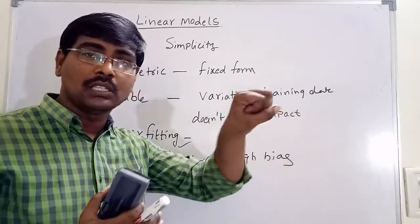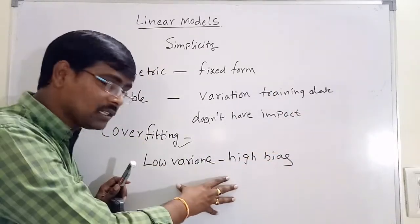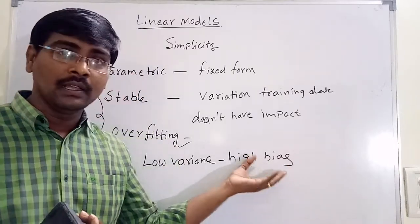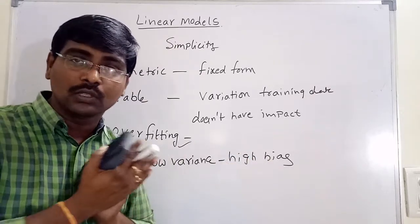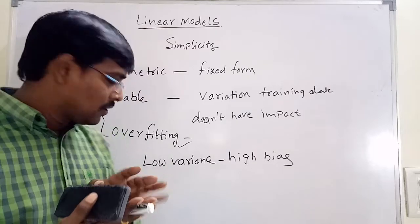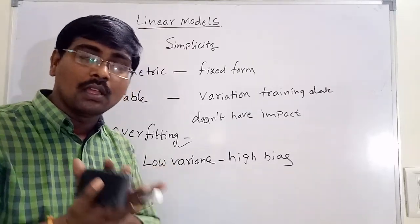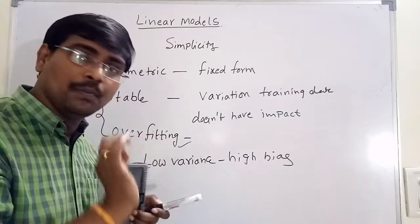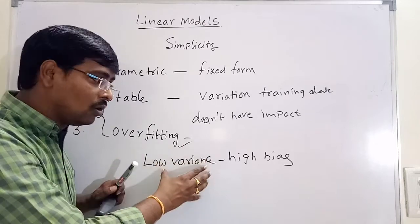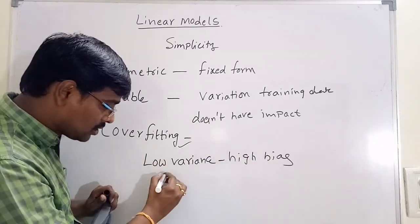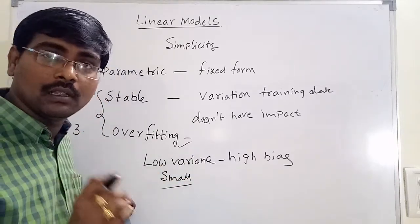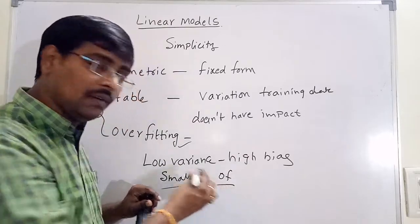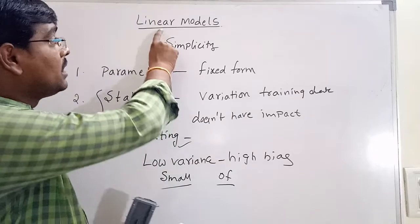Compared to decision trees, which are high variance and low bias. The advantage of high bias is that overfitting is eliminated — there is no chance of overfitting when using high bias models. Decision trees with high variance are used when data is abundant. The simple point is: linear models with low variance and high bias are used when we have a small set of data and want to avoid overfitting — in that case, these linear models are preferable.